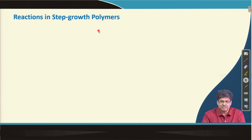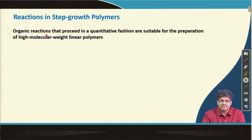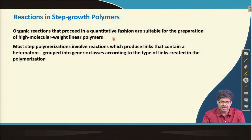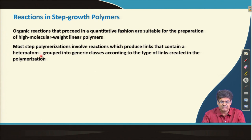Which reactions are typically used for step growth polymers? The organic reactions need to proceed in an almost quantitative fashion — 99 percent or more conversion yield — to produce high molecular weight linear polymers. Most step polymerizations involve reactions that produce linkages containing heteroatoms like oxygen, which is why these polymers are grouped into general classes like polyesters, polycarbonates, and polyamides.